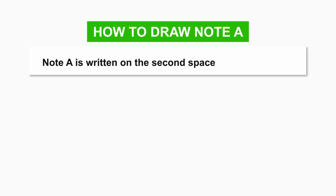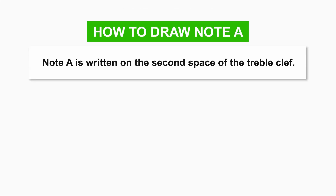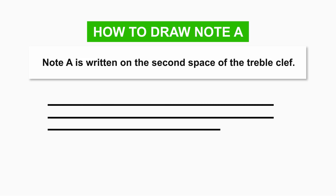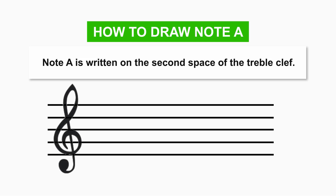Note A is written on the second space of the treble clef. Don't forget, you first of all draw your treble clef. Then, you can now draw the note on the second space of the treble clef.